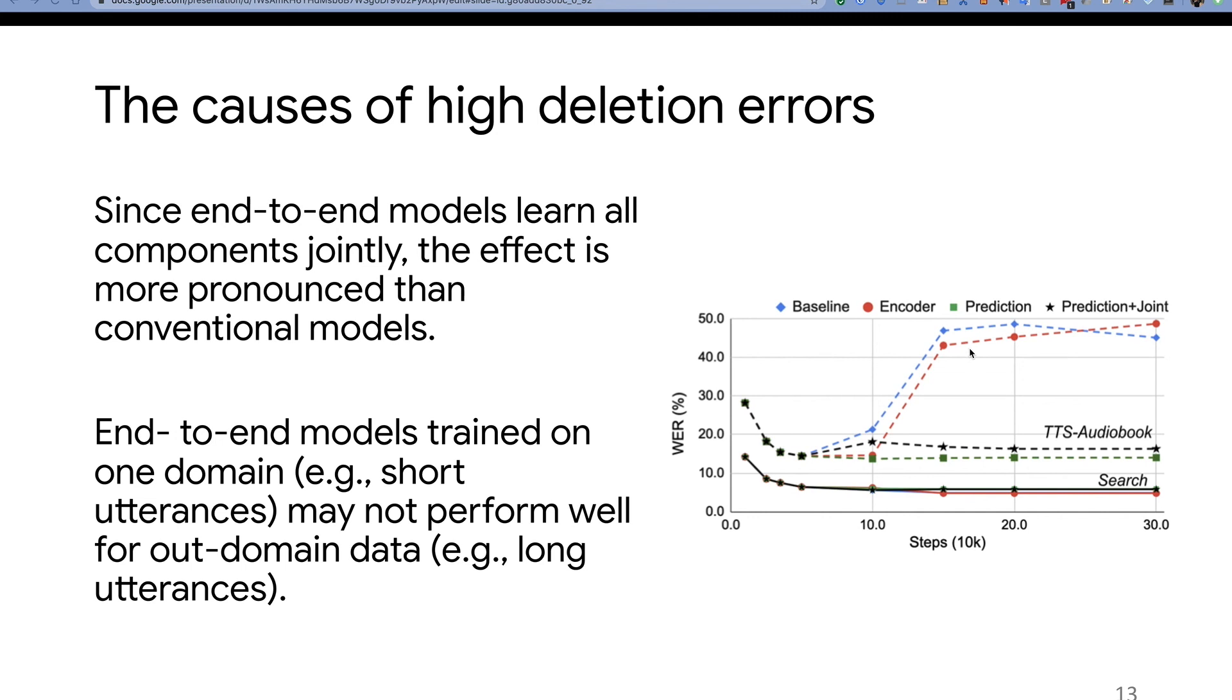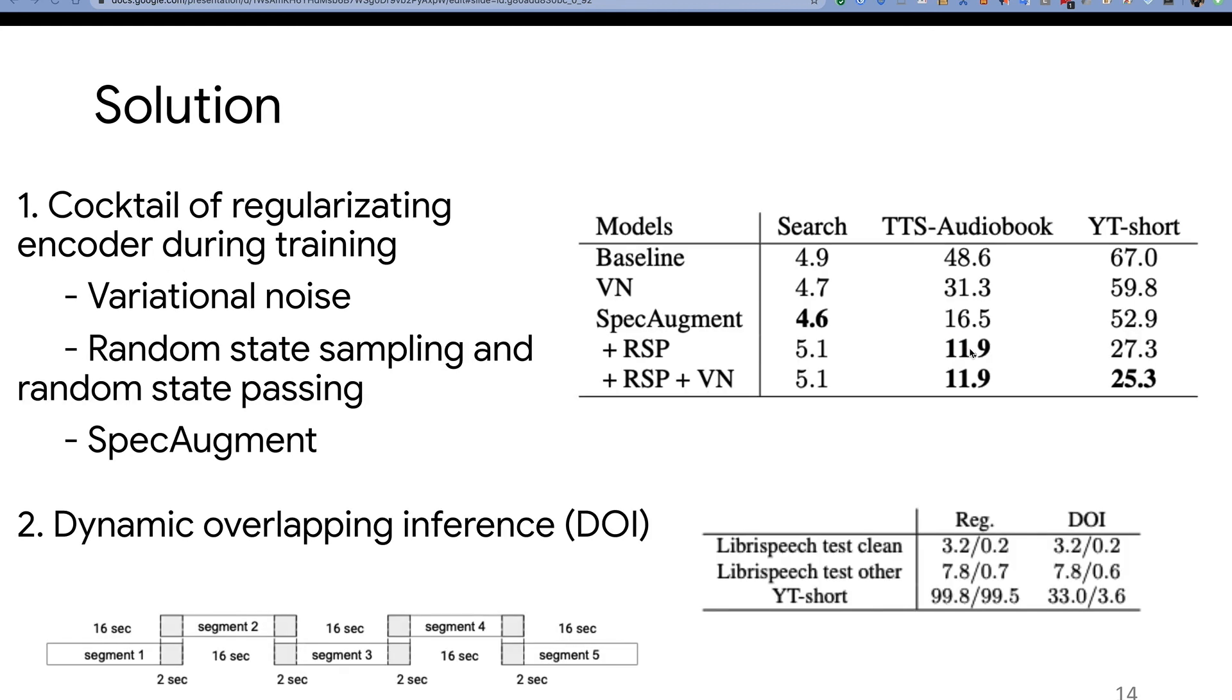This means the out-of-domain errors become very serious. So the conclusion is, the high deletion errors are more related to the encoder than the prediction network.